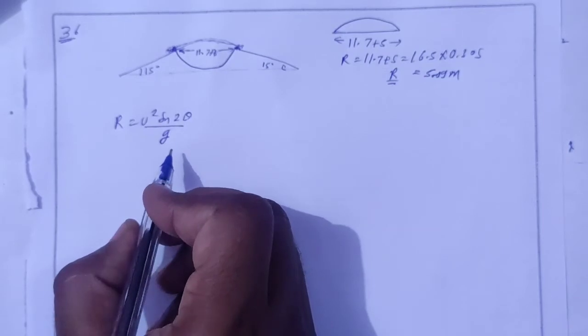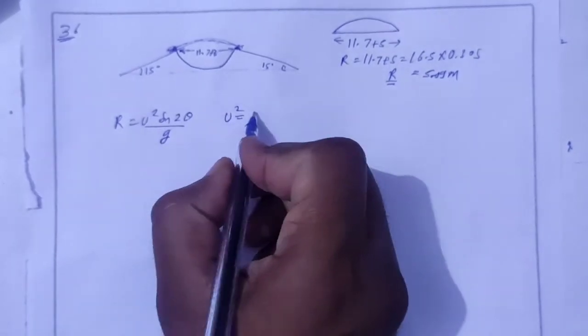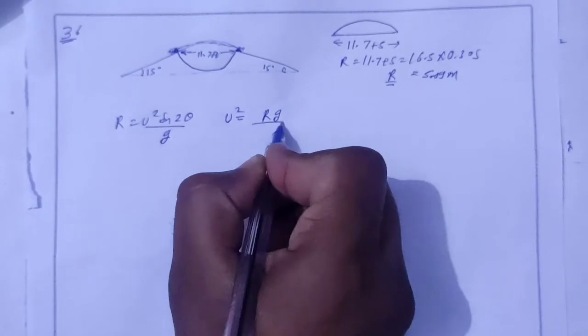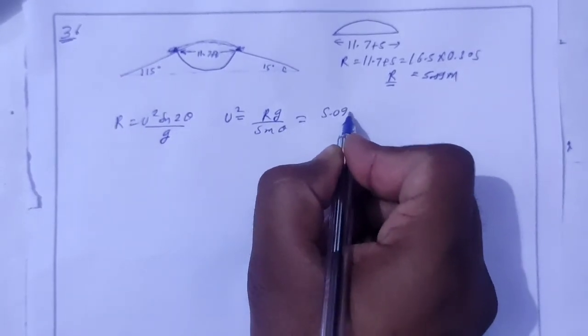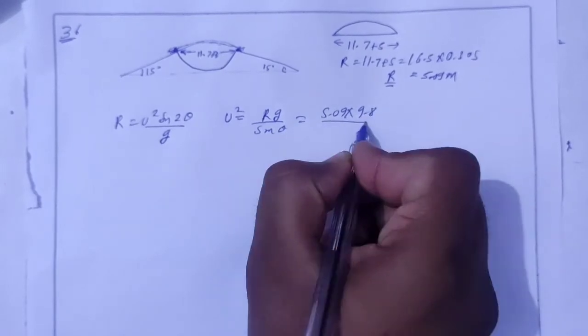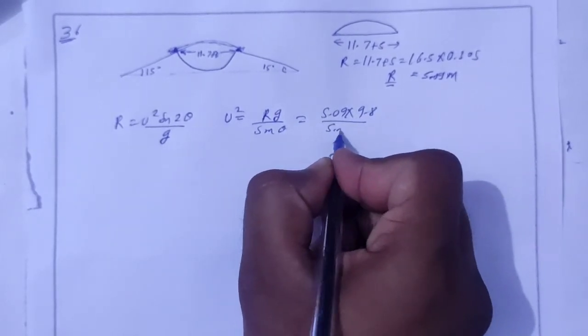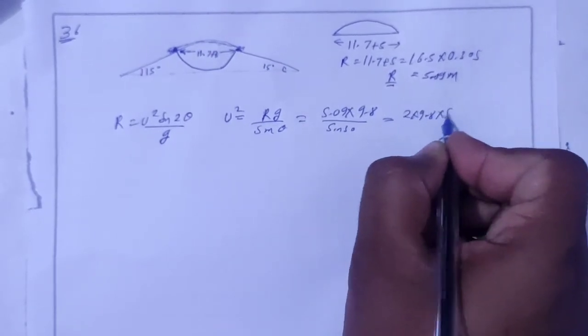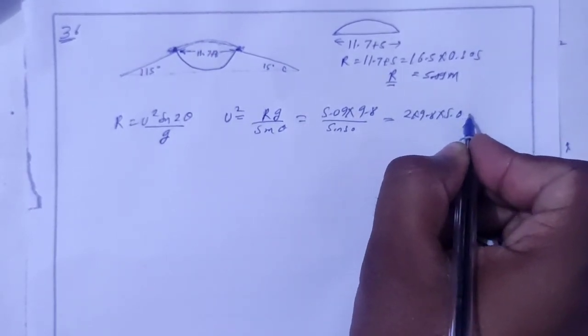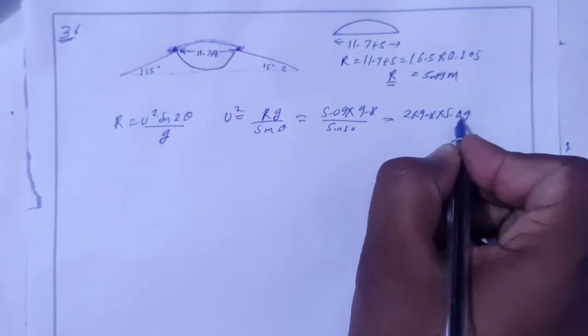The formula is u squared equals rg by sin 2 theta. Putting the values: r is 5.09, g is 9.8, sin 2 theta is sin 30, which is 1 by 2. So 2 into 9.8 into 5.09.